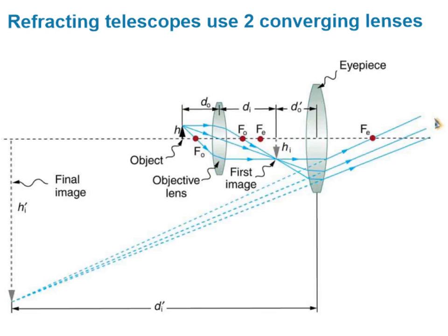We want to magnify that first image, so the second lens — the eyepiece lens — takes that first image, treating it as though it were an object. The eyepiece is positioned such that this image is within the focal length of that lens, and therefore it produces a final image that is virtual and very magnified.